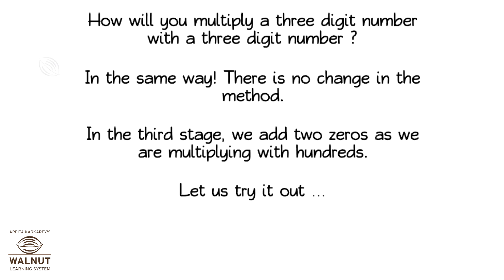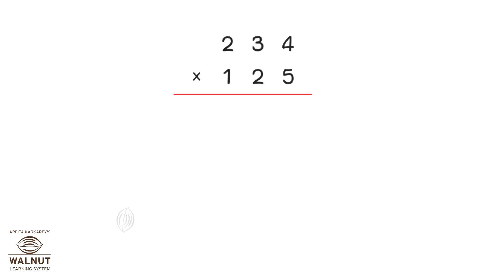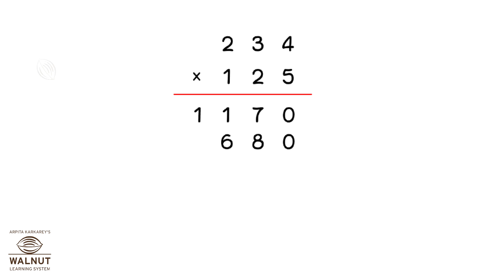Let us try it out. We start multiplying the units. Then we put in a 0 and multiply with the tens. Then we put in two zeros and multiply with the hundreds.